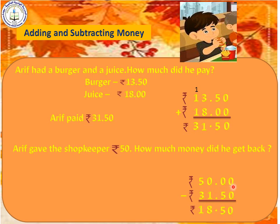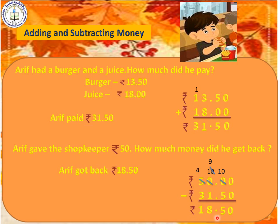We subtract like this. 0 minus 0 is 0. 0 minus 5 is not possible because 0 is smaller than 5, so we borrow. The next digit is also 0, so we move to the 5. Cut the 5 — it becomes 4. Borrow from the 1 so this 0 becomes 10. Cut 10 — it becomes 9, and the next 0 becomes 10. Now: 10 minus 5 is 5, 9 minus 1 is 8, 4 minus 3 is 1. The answer is 18 rupees 50 Paise.